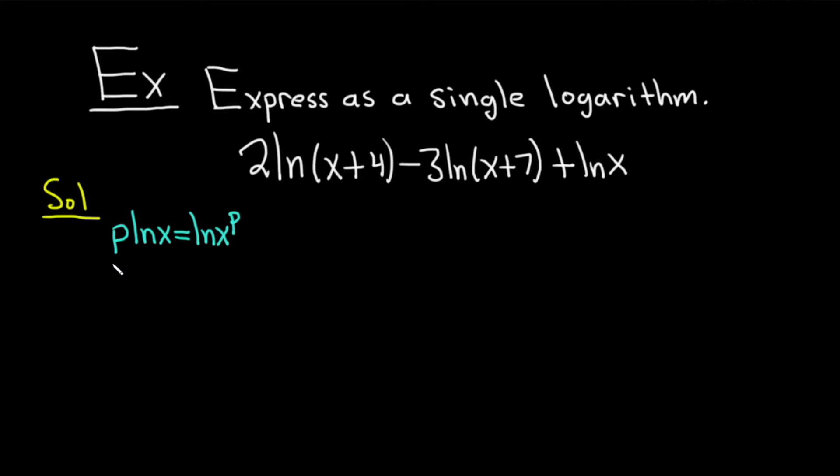The second formula we're going to use says if you have two logs and you add them, ln(x) + ln(y), that becomes multiplication. It becomes ln(xy). This one's called the product rule. And the last one says if you have ln(x) - ln(y), this becomes ln(x/y).